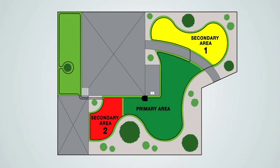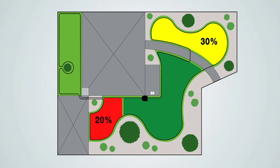If, for example, a percentage of 30% is assigned to secondary area 1 and 20% to secondary area 2, the robot will work half the time on the primary area and divide the rest of the operating time between the two secondary areas.